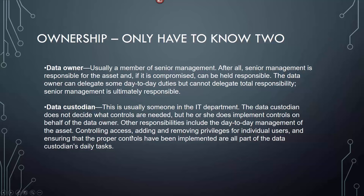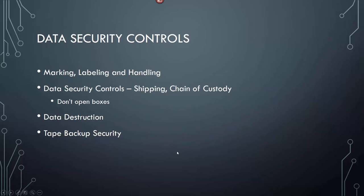The data custodian works on behalf of the data owner. Other responsibilities include day-to-day management of the asset, controlling access, adding or removing privileges for individual users, and ensuring proper controls have been implemented — those are all daily tasks, which is another key term. For data security controls — marking, labeling, and handling will be a couple of questions on the test. Chain of custody means you're not allowed to open boxes on the way to their destination. If you lose your hard drive or leave a box open while at lunch, you've broken chain of custody.